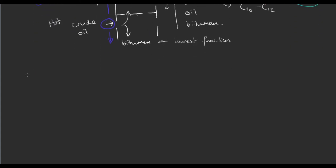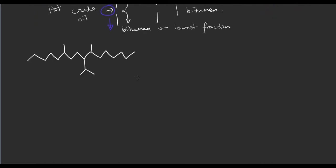Now that we've separated out crude oil, we might have something like a very long chain hydrocarbon taken from one of the lower fractions of the column, perhaps with some additional branching — so it might be in the oil or bitumen fraction. This is possibly not very useful to us; we'd much rather have this in the form of petrol, for example hexane. We can do this using a process called cracking.